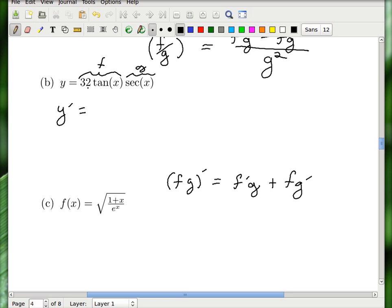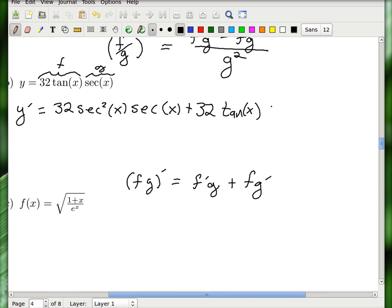Y prime is equal to, so derivative of this first part is 32 secant squared x, and oh my god, there's another secant there. I might have to collect those and simplify, that's very tempting. And now let's do plus. Now leave the first part alone and you get 32 tangent x. And now I write the derivative of secant, which is secant x tangent x.